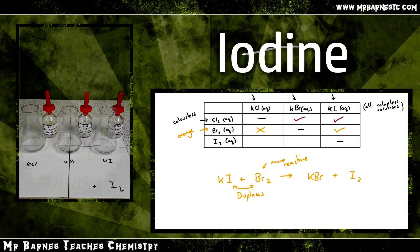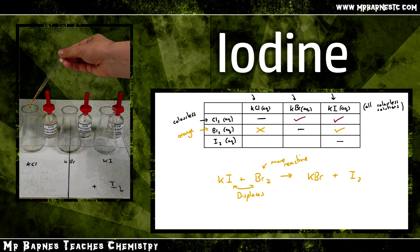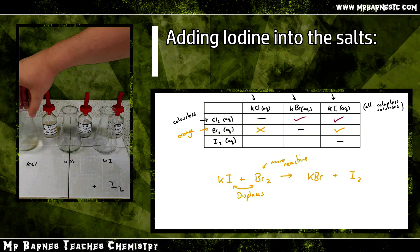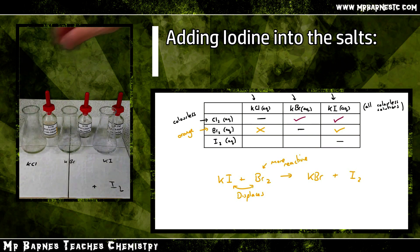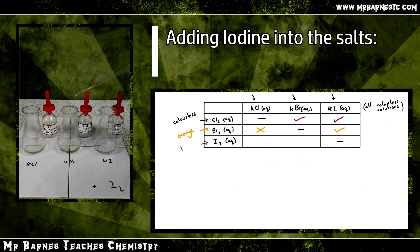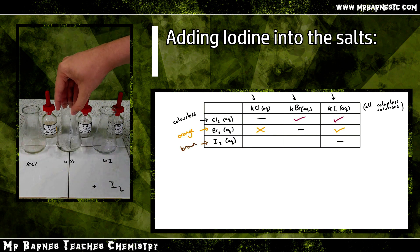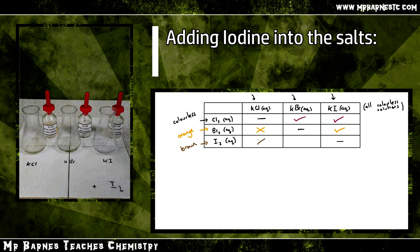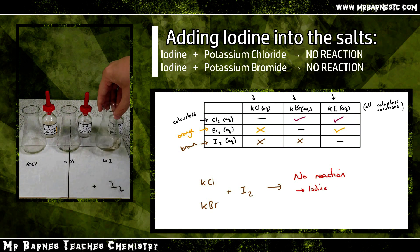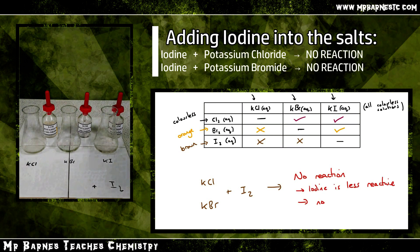Finally, iodine — we've already worked out that chlorine and bromine are more reactive than iodine, so we shouldn't see anything happen. As you can see, I've put iodine into all three solutions and there has been no colour change. This proves that iodine is less reactive than bromine and chlorine.